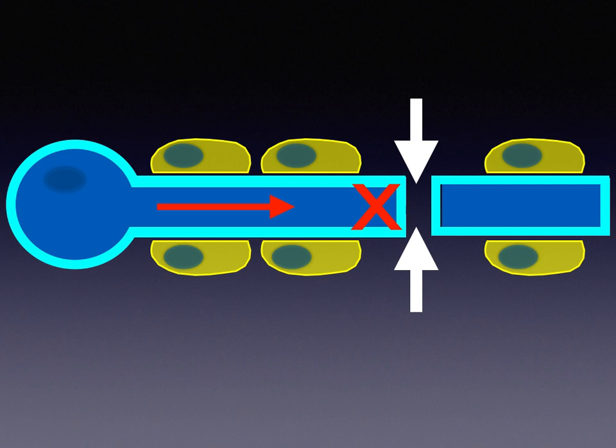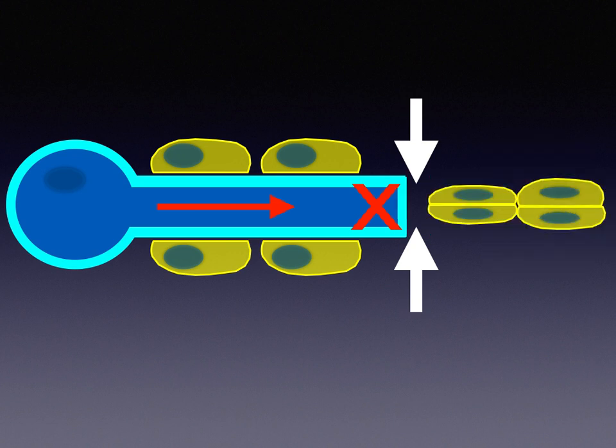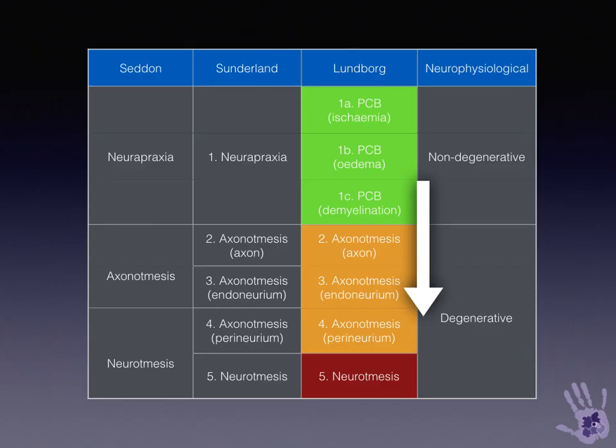Persistent injury such as compression, scar, or displaced fracture fragments can result in axonal damage, involution and resorption of the distal axon, and then nerve regeneration only if there's physical continuity of endoneural tubes. The important thing to bear in mind is that a conduction block injury, if not recognised promptly, may deteriorate to an axonal injury.